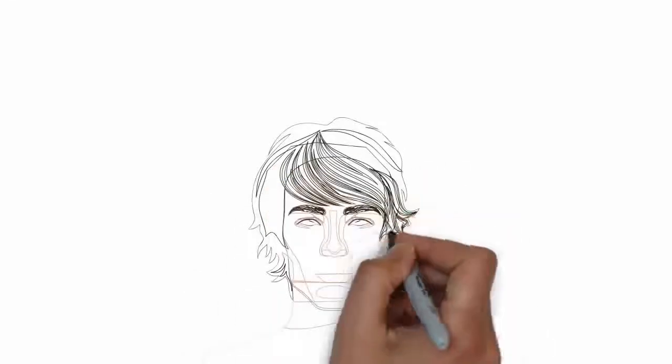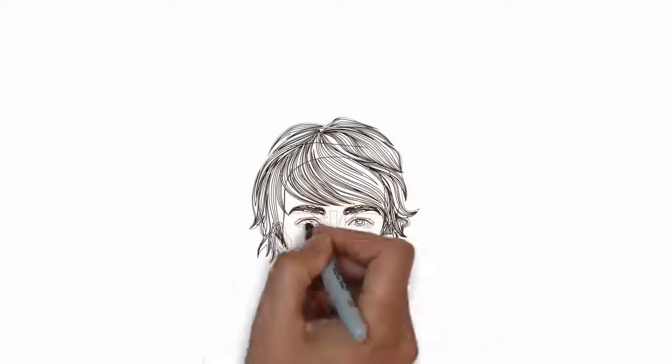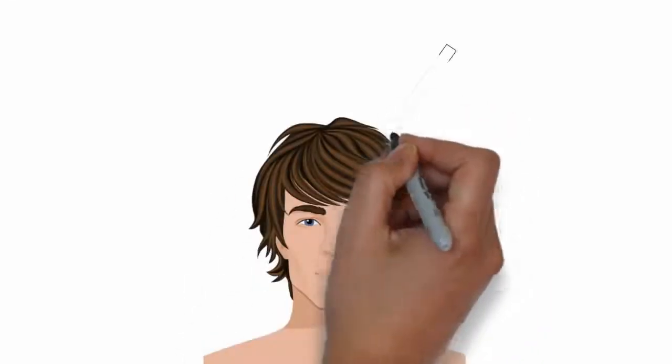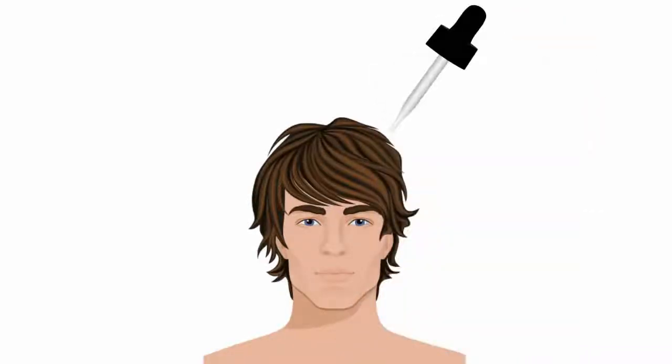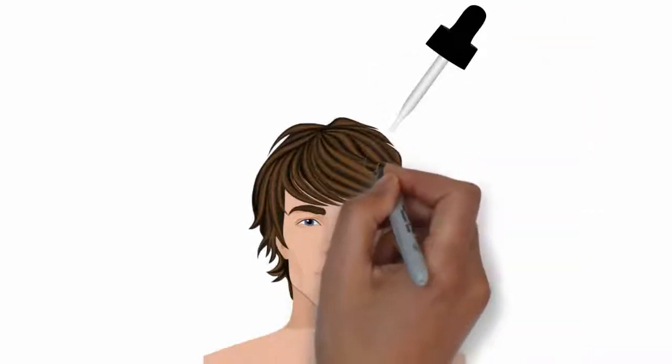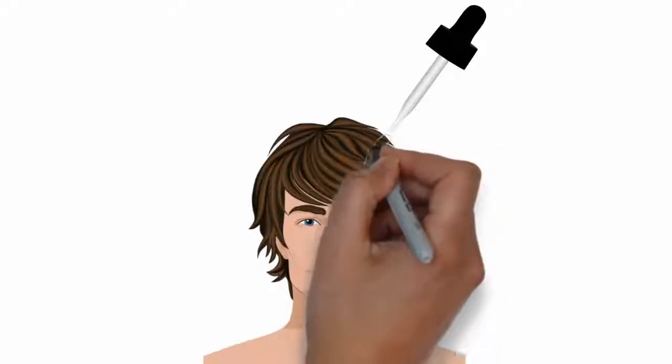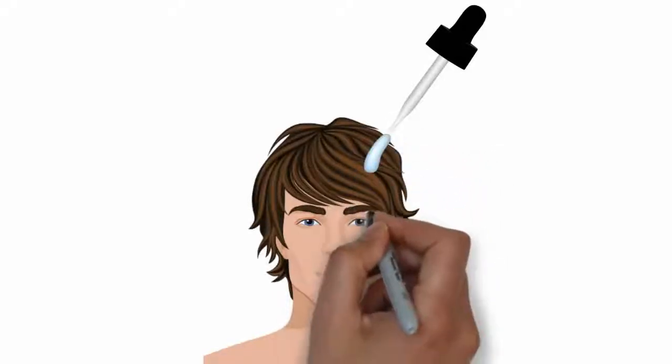The first applicator we'll discuss is the dropper. This is the first applicator to come out for the topical minoxidil treatment. Although the user is able to drop the solution on the targeted area, the problem with the dropper is that the solution tends to roll down the scalp and onto other parts of the body, including the face and neck, creating a messy application.